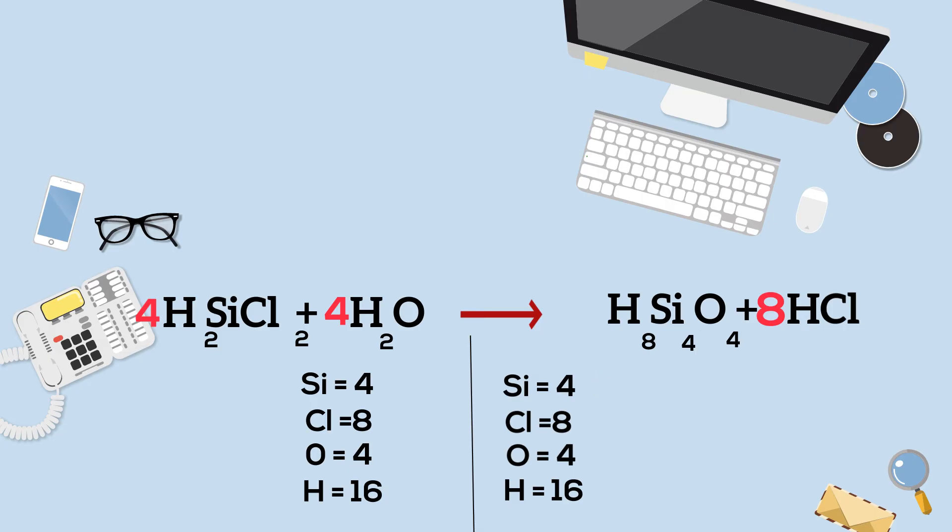So that now gives me 16 hydrogens because I have eight hydrogens from H2O and eight from the other compound. So I have 16 hydrogens and that gives me four oxygens.